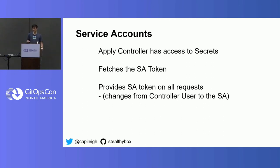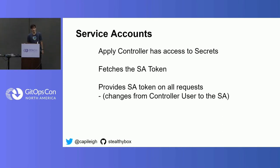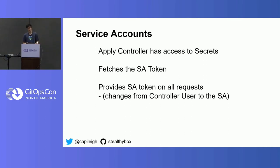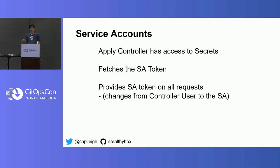Usually the way that works is the apply controller has RBAC access on its controller service account to fetch some secrets. The cool thing about service accounts is they're a very peculiar mechanism. Basically, the API server in Kubernetes, when it sees a service account, it makes a token for that thing and puts it into a secret in the same namespace next to the service account. So if we have access to those secrets as a controller, we can get the service account secret and then pretend to be it when we talk to the API server, changing our identity from the controller service account to the service account identity through the token.